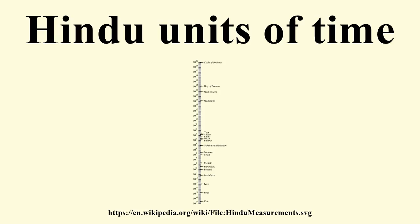In the reckoning of time among other entities: among the Pitrs, one human fortnight equals one day or night of the Pitrs, and one human month equals one day and night of the Pitrs. Thirty days of the Pitrs equals one month of the Pitrs; twelve months of the Pitrs equals one year of the Pitrs. The lifespan of the Pitrs is one hundred years of the Pitrs. One day of the Devas equals one human year; one month of the Devas equals thirty days of the Devas; one year of the Devas equals twelve months of the Devas.